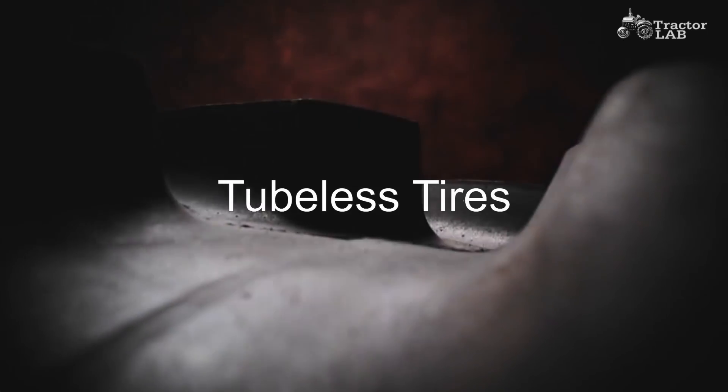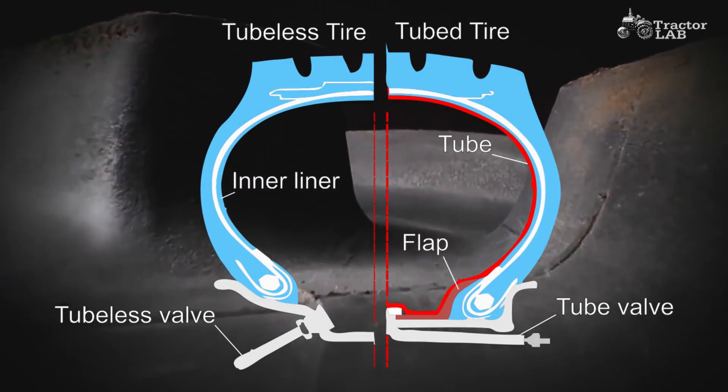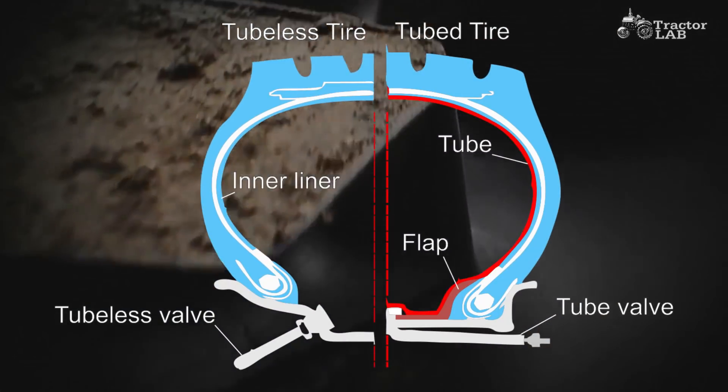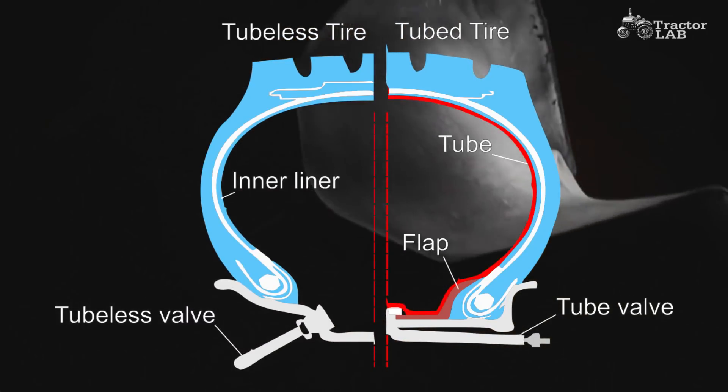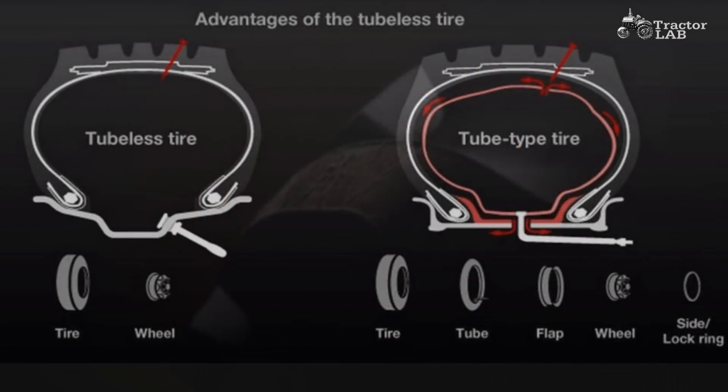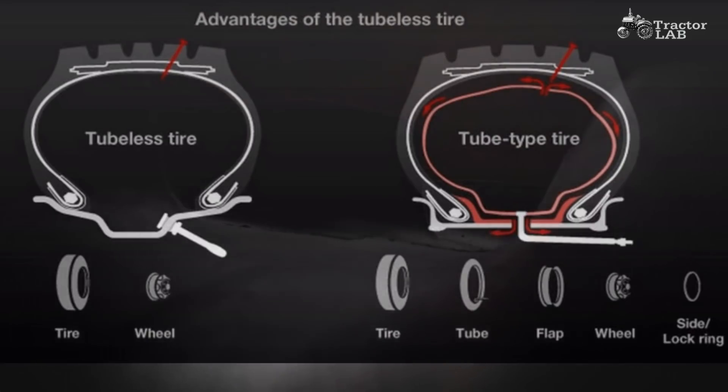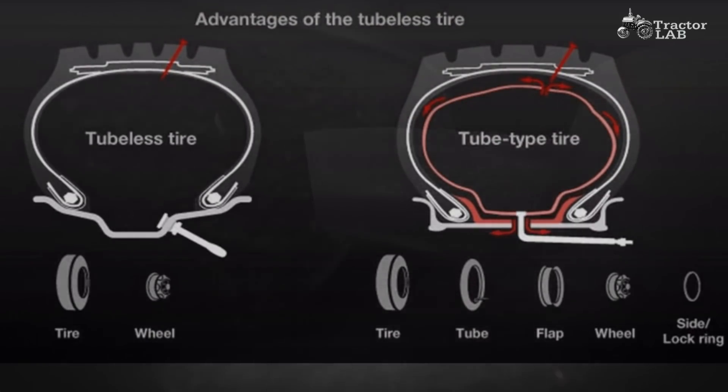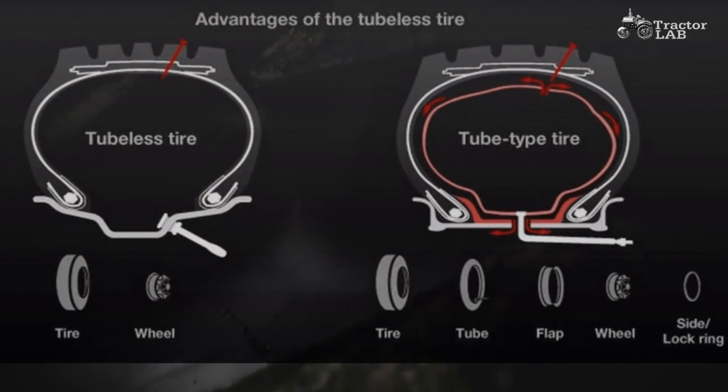Tubeless tires have been used for many years on combines and industrial tractors and have recently been adopted at all wheel positions by leading tractor manufacturers. They operate at the same inflation and have the same load capacity as equivalent tube type tires. Not only do tubeless tires provide higher reliability and easier puncture repair, but also lower assembly costs than tube type tires.